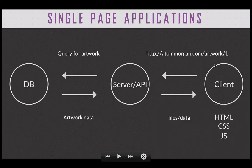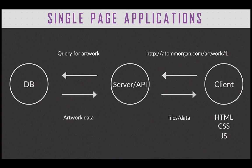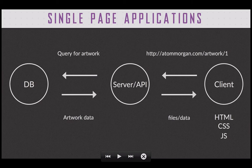This next type of website is what we refer to as single page applications. As a client, what you're doing is still exactly the same — you go to the website, click on a piece of art — but now you're hitting what we typically refer to as an API. It's still a server, we just call it an API. It queries the database, gets the data for that piece of art, but instead of sending back constructed HTML, CSS, and JavaScript, this API sends back just data. The client then takes that data and constructs the HTML you see, styled with CSS and made interactive with JavaScript.